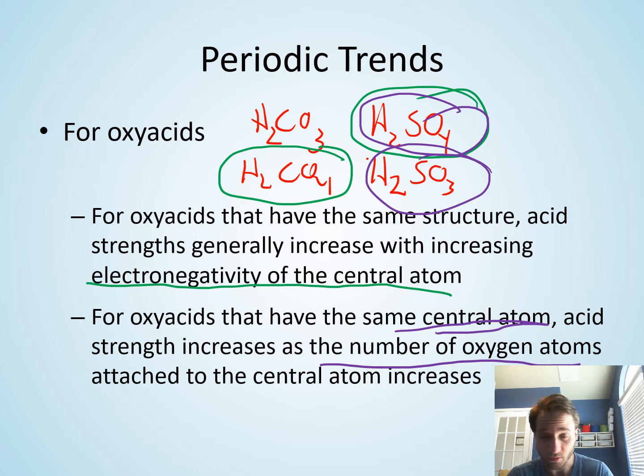And so that is it for our trends for acids and bases. In terms of periodic trends, we have binary acids - as you go right and down the periodic table for binary acids, the acid strength increases. And then for oxyacids, if you have the same number of oxygens, then it's that central atom - the more electronegative it is, the stronger the acid. If you have the same central atom, then it's the more number of oxygen that you have that makes it a more acidic acid.